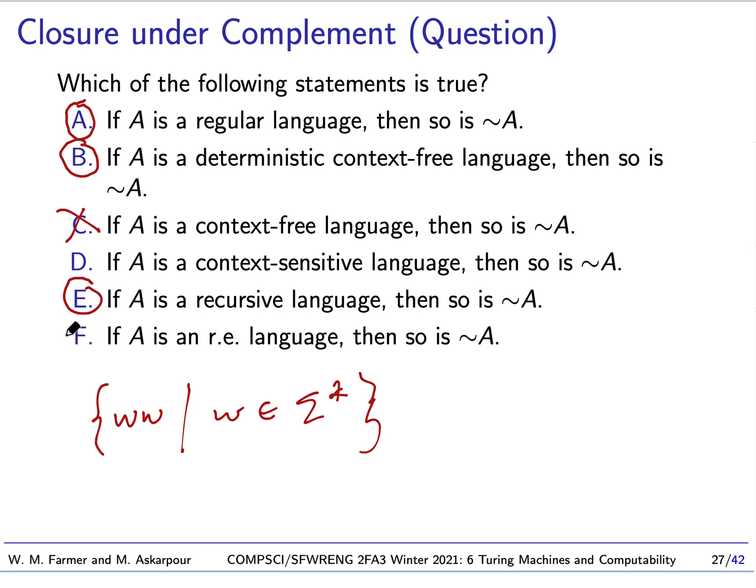And it's also the case that if we have a recursively enumerable language, its complement may not be. The one left, I'm only mentioning this because it's a curious fact. The complement of a context-sensitive language is context-sensitive, but this was only recently proved in 1988. It's a relatively new result.